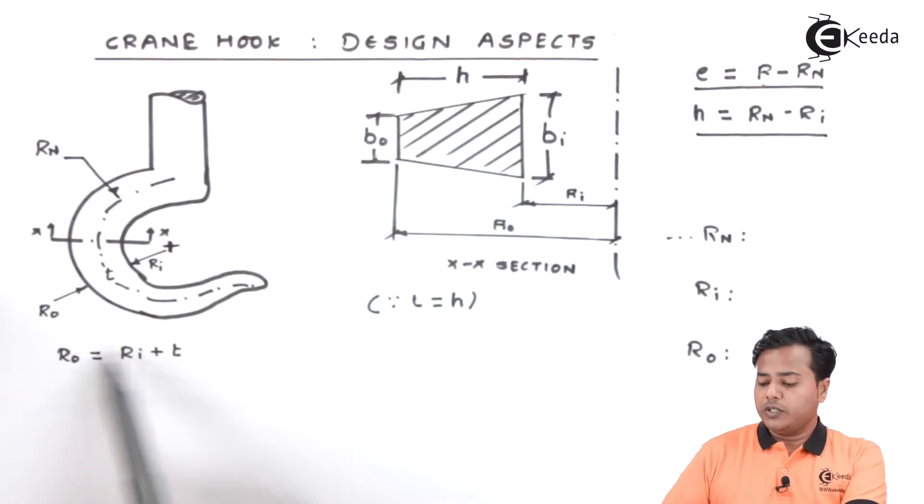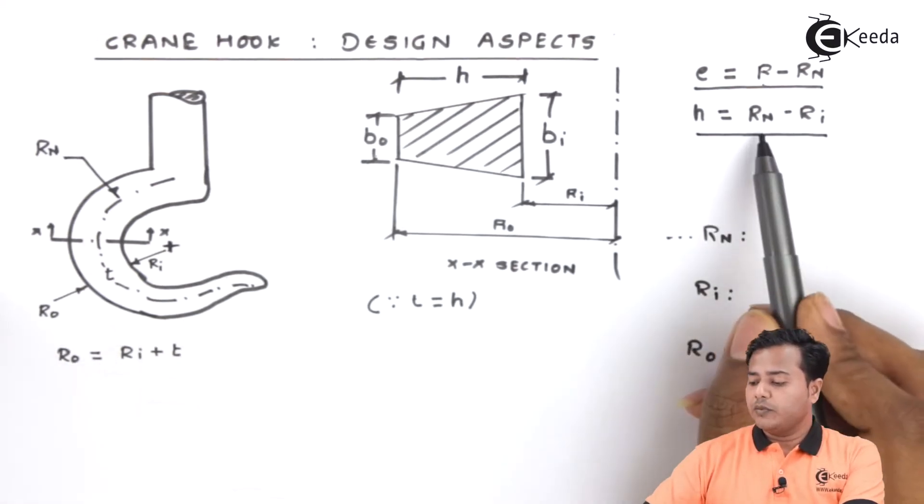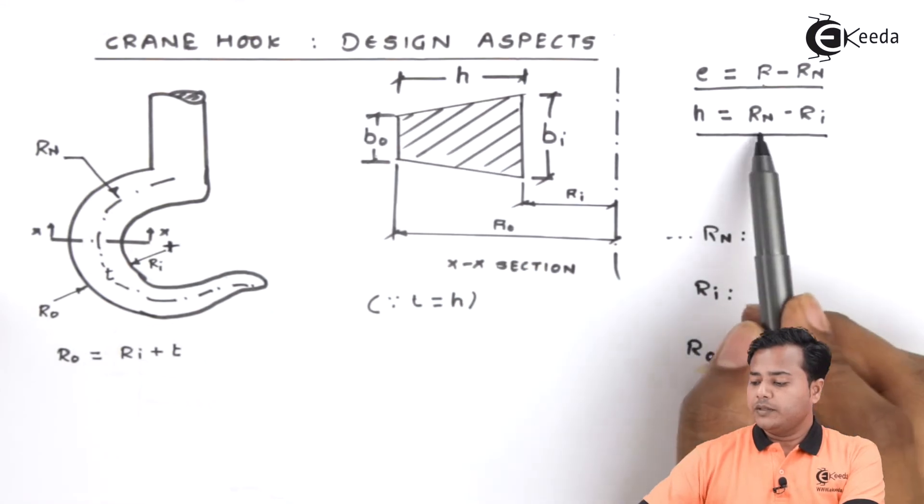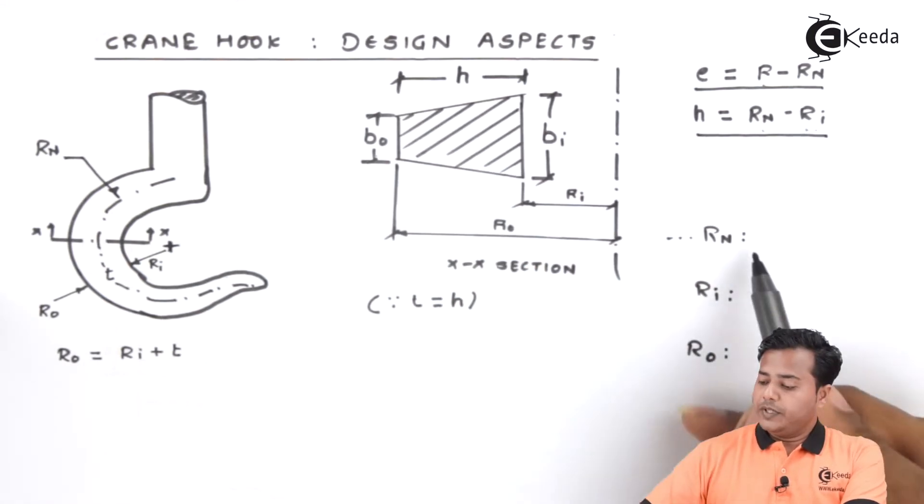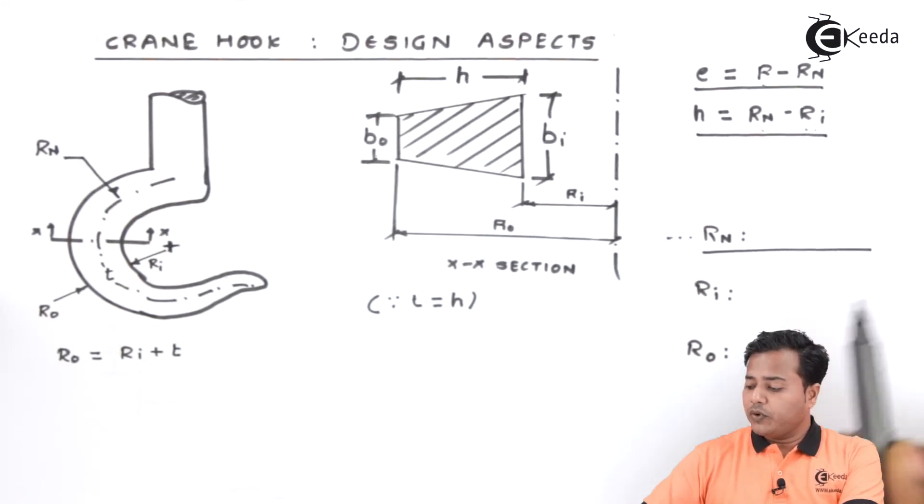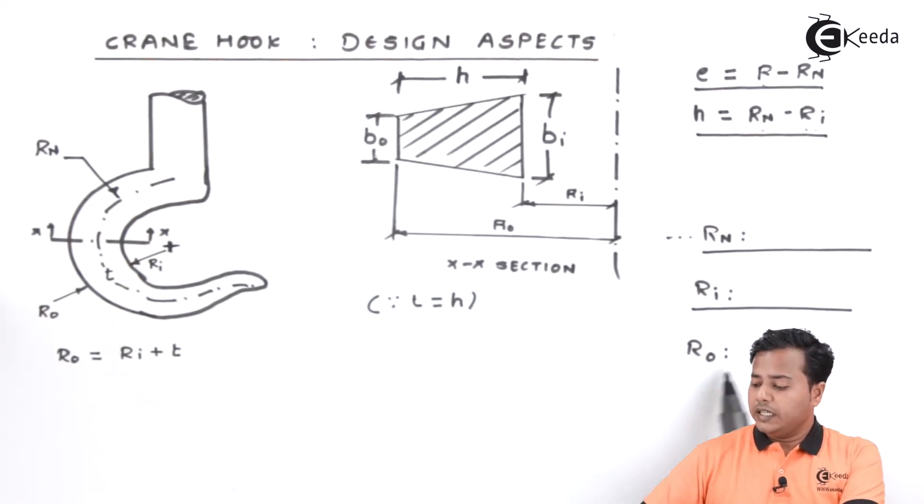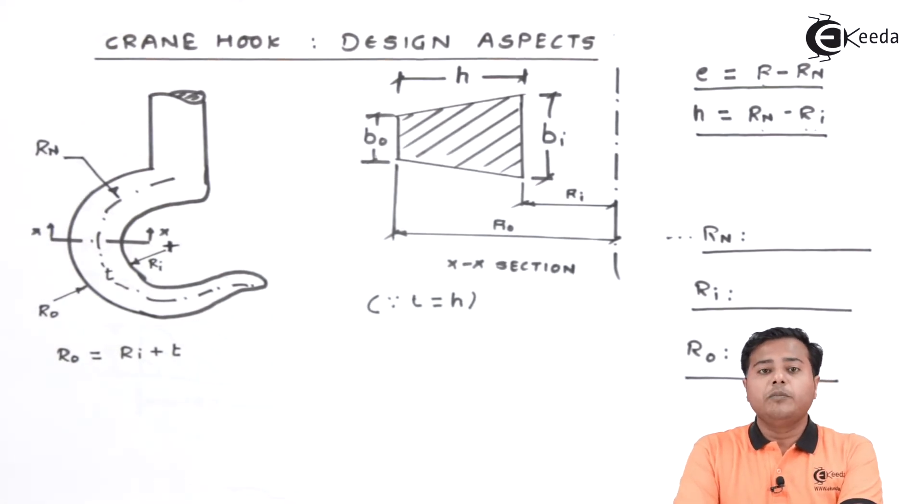So h will be rn minus ri. Thereafter there are particular formulae for neutral radius, inner radius and outer radius and all these relations we can find in PHG data book. The relations are quite large so it's advised to refer to the PHG data book and not to mug up these equations.